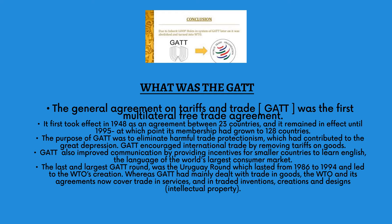Whereas GATT had mainly dealt with trade in goods, the WTO and its agreements now cover trade in services, inventions, creations, and designs. The main loophole of GATT was that it only worked on tariffs on goods and did not account for services. The WTO now takes care of all these things.